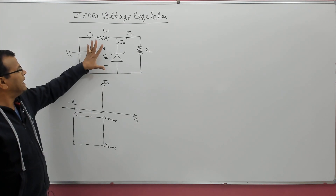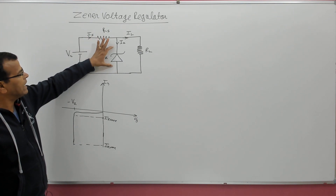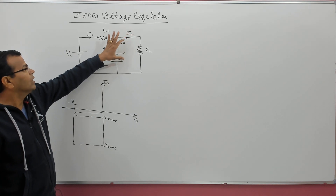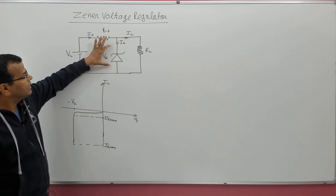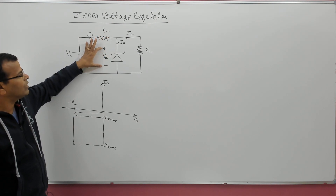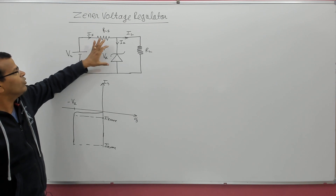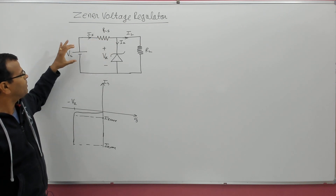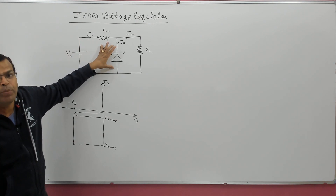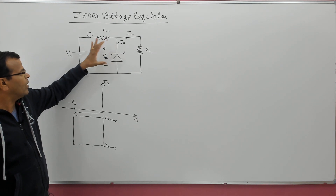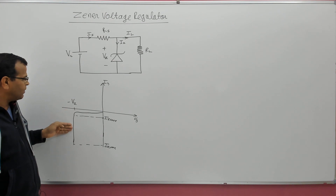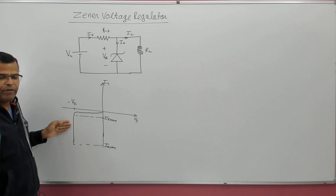In the Zener voltage regulator, the Zener diode is connected across the load. We know the voltage across the Zener diode under reverse bias mode is always almost fixed at a level of VZ. We assume that the supply voltage is sufficient so that the Zener is working in breakdown mode. When the Zener works in breakdown mode, as you can see from its characteristic, the voltage across the diode is fixed but the current through the diode can vary.